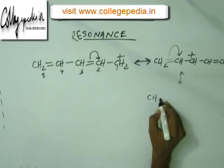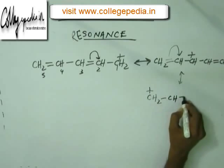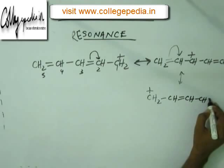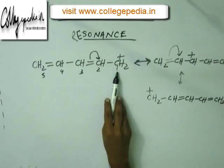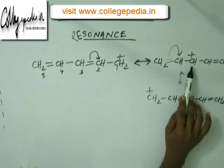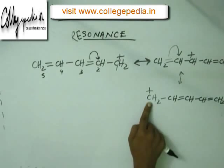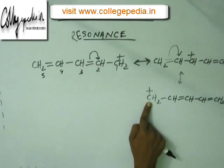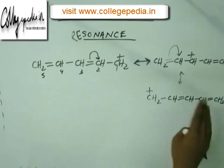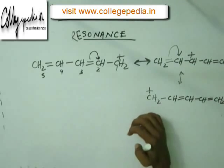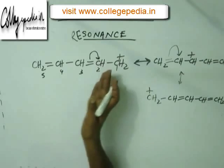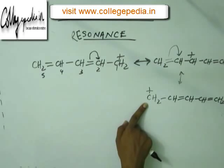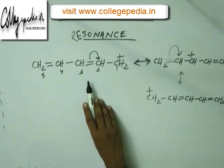Drawing the next resonating structure, the plus charge was at C1 in the first RS, moved to C3 in the second RS, and moved to C5 in the third RS. The charge cannot move further because there is no atom remaining. This is the final RS — we cannot draw any more. Going back would give the same RS again, so for this intermediate we can draw a maximum of 3 resonating structures.